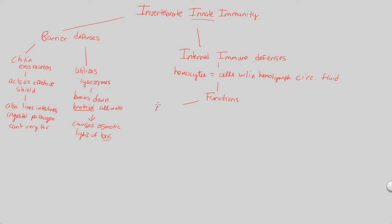One of the major things hemocytes do is phagocytosis, highlighted in figure 43.3. We'll talk more about phagocytosis when we look at mammalian innate immunity. For now, phagocytosis is simply the way a hemocyte will consume a foreign invader internally and break it down.